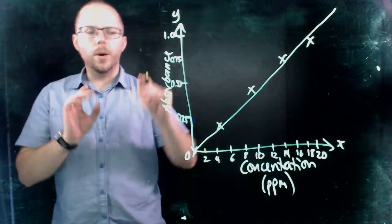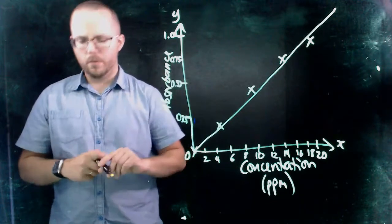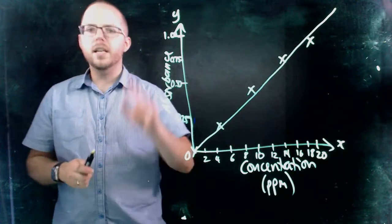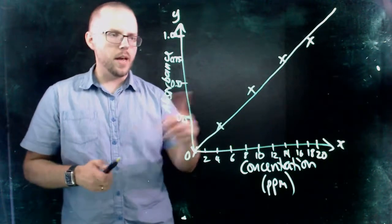And so then what we do when we're going to do our actual sample, we use the line. So even though it may not exactly fit with your data points, the line is king. So now that you've got your line.